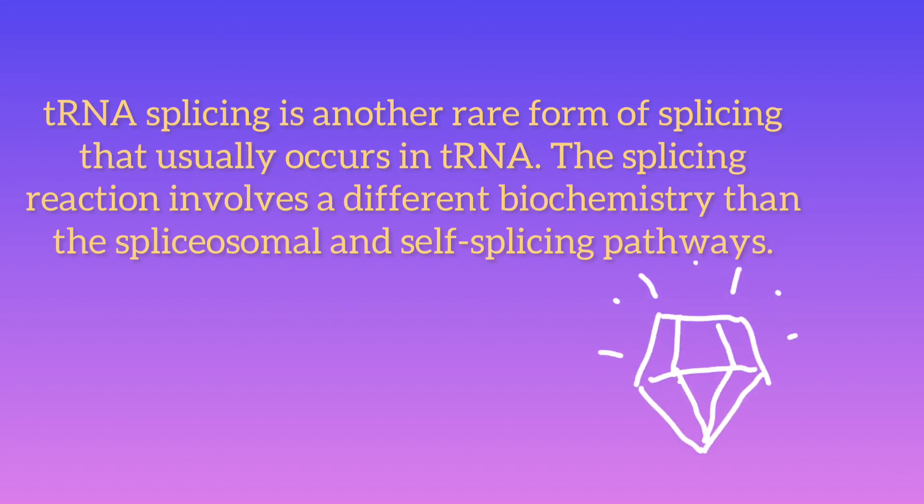Yeast tRNA ligase adds an adenosine monophosphate group to the 5-end of the 3-half and joins the two halves together. NAD-dependent 2-phosphotransferase then removes the 2-phosphate group.